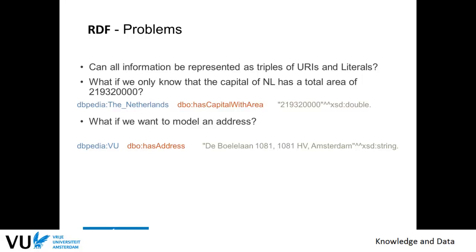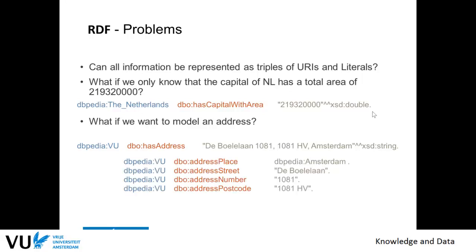In the second example, do we have something related to a DBpedia resource that has an address — and it has certain properties — without actually having to give a name to this address? For this, there is a means of doing existential quantification or using variables, so we can talk about an address object that has a place, a street, a number, and a postcode without giving it a name.